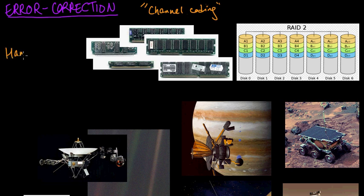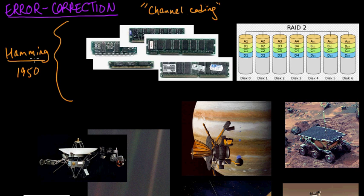The first place to start is with Hamming codes. In 1950, Richard Hamming introduced a really elegant family of error correction codes. Before Hamming, there existed some basic techniques like parity checks and repetition codes, but they didn't really do a very good job. Hamming's codes jump-started the field of error correction coding — sometimes called ECC — as the first reasonably good error correction codes.